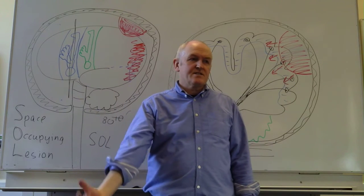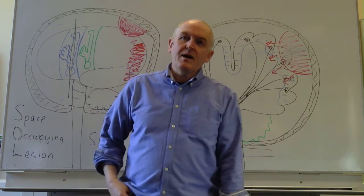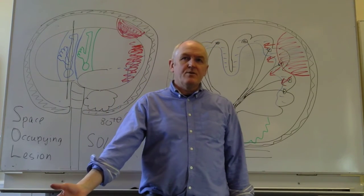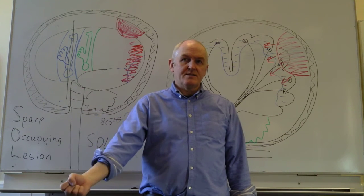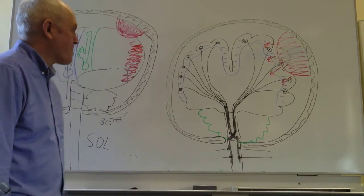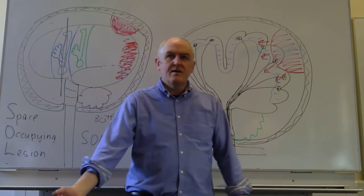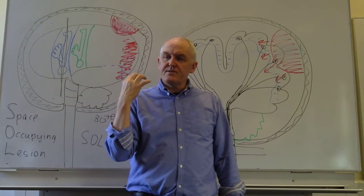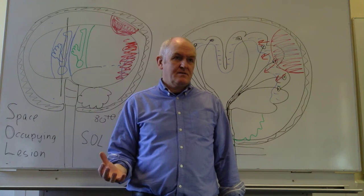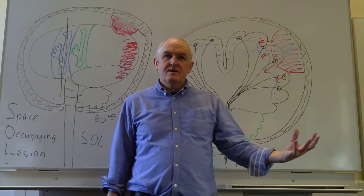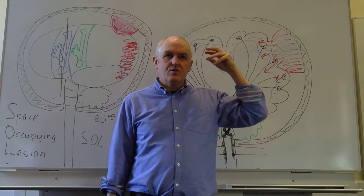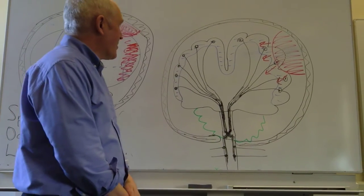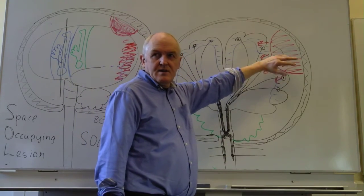We know that the left motor cortex controls the right-hand side of the body. So if there's a space-occupying lesion on the left, the left motor cortex may not be working properly, and that means the right side of the body is not working properly. What you notice first is weakness — one side of the body becomes weaker. If we test the strength of the right arm, wrist, elbow, hip, knee, and ankle, and that is reduced compared to the left, it could indicate that the left cerebral motor cortex is being compressed. A right-sided weakness could indicate a left-sided space-occupying lesion with raised intracranial pressure.